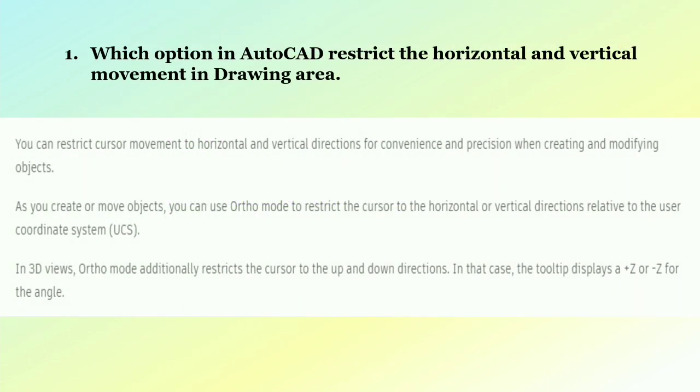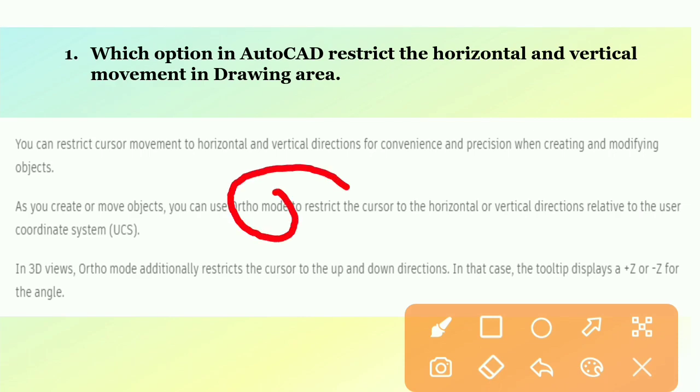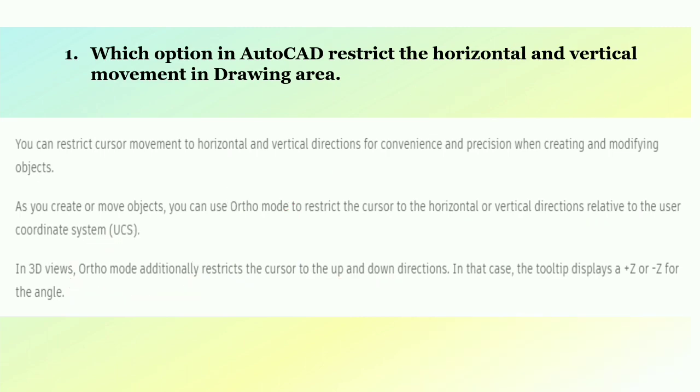From AutoCAD, like which option in AutoCAD restrict the horizontal and the vertical movement of drawing area. So you can restrict the cursor movement of the horizontal and the vertical area for the convenience and precision when creating and modifying objects. As you create or move the objects you can do in the ortho mode. In 3D views ortho mode additionally restricts the cursor up and down.